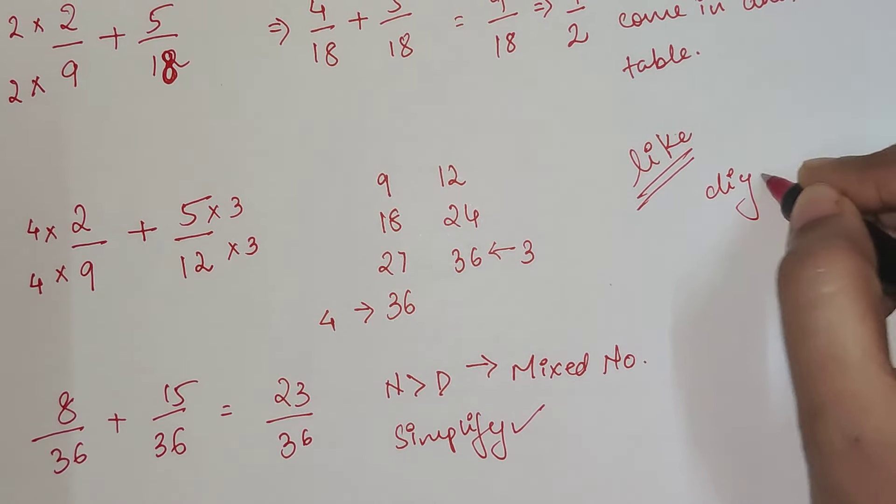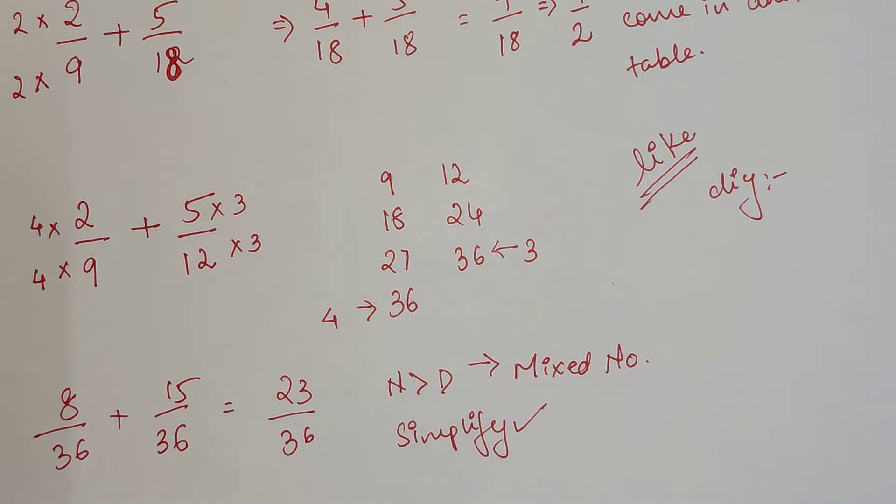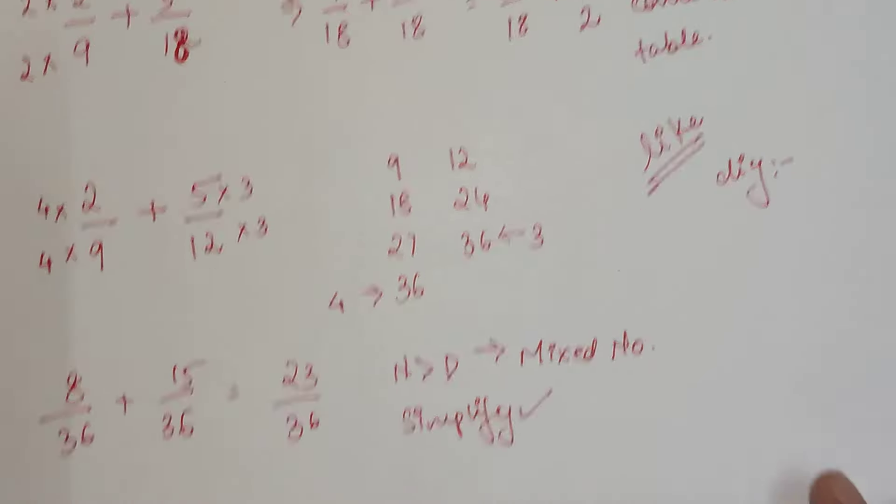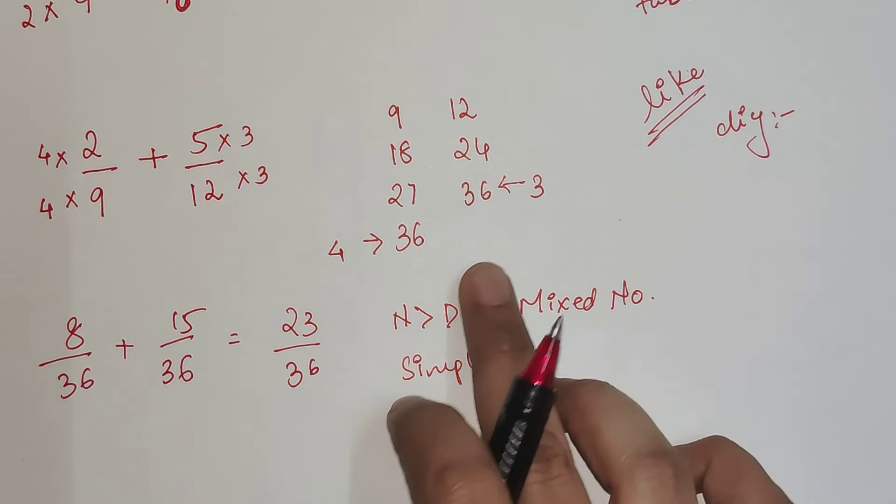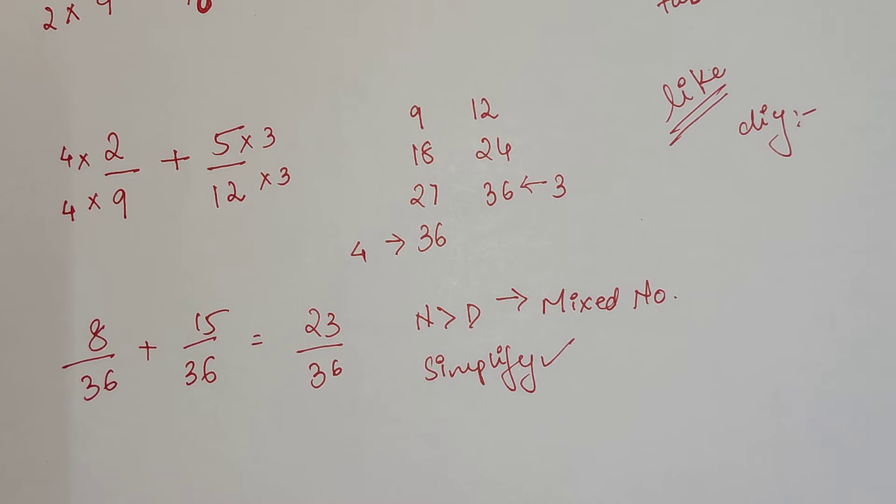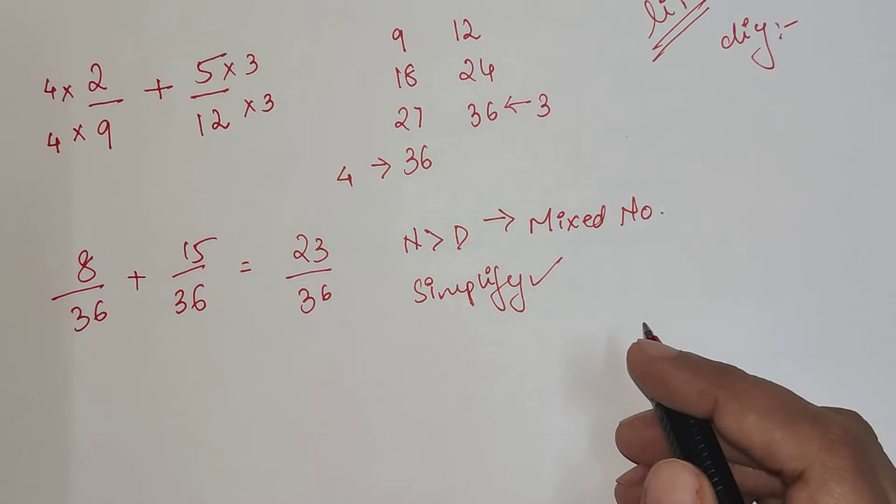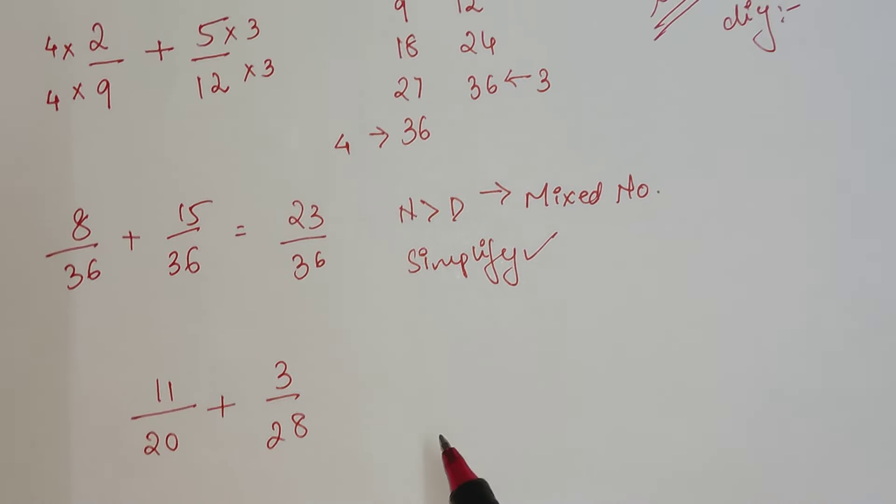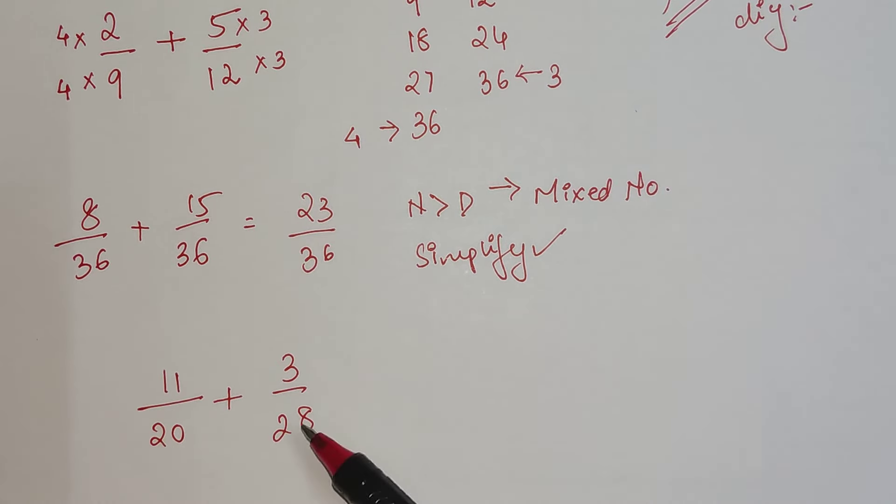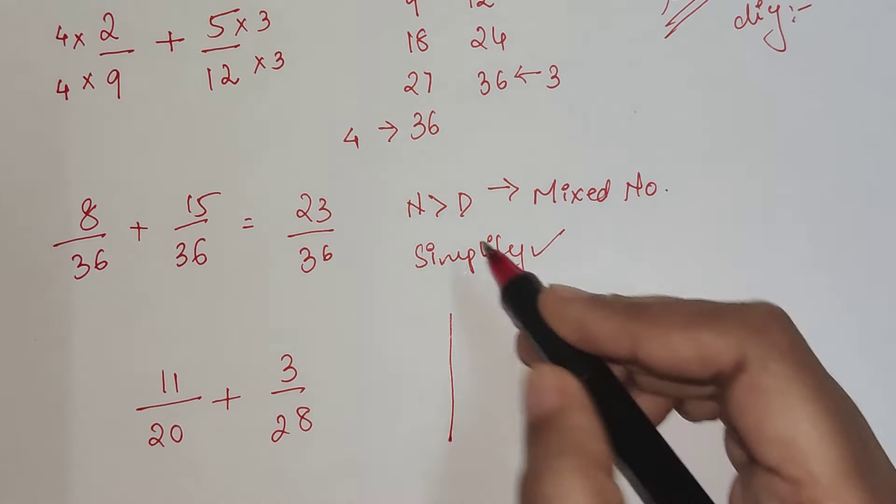Also don't forget at the end I'm going to put up a DIY question whose answers you can mention in the comment section. So here, finding the LCD, we found with one method using the table form. Now let's try this with another one: 11 upon 20 plus 3 upon 28. Doing this with the table form would get a bit tricky because table of 28 would get difficult.